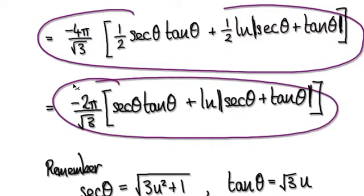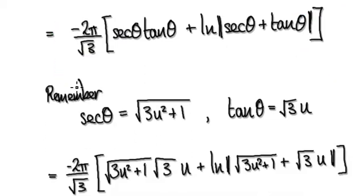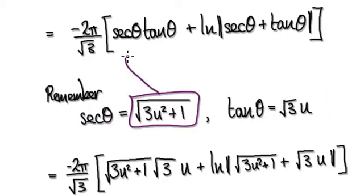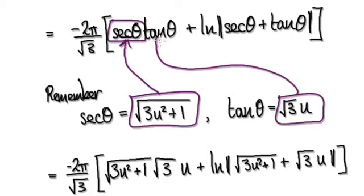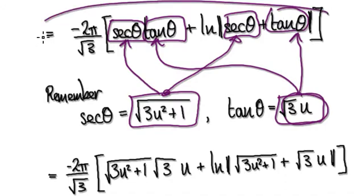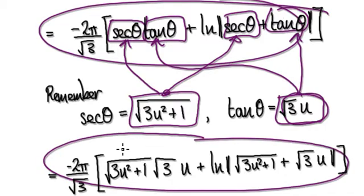Tidy this up, which then takes you to here. Remember earlier we said secant θ equals √(3u²+1), and tan θ equals √3u. So we can put this back into here, and then put this back into here. Secant θ here and tan θ here.